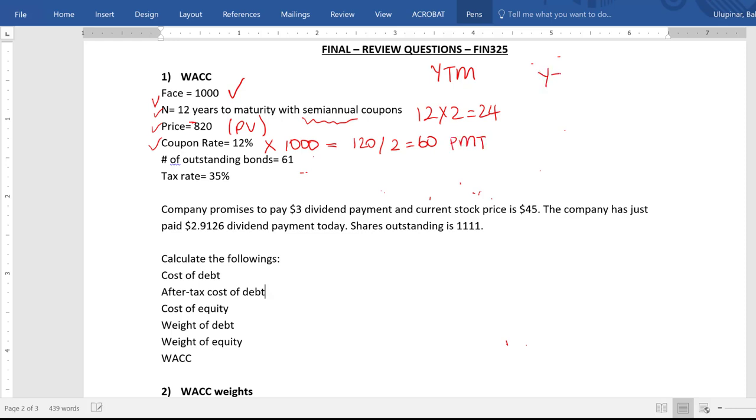So for YTM, when you solve for the interest rate on your financial calculator, that interest rate will be 7.66%. And this is the period rate since everything we entered is based on semi-annual compounding. So we have two semiannuals within a year. So YTM will be equal to 15.32%. So this is our cost of debt.